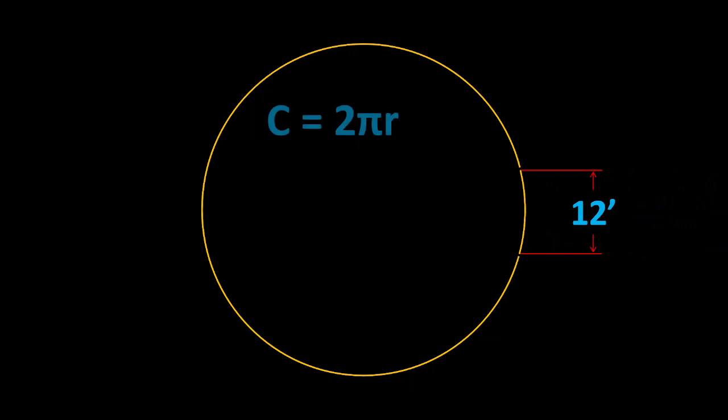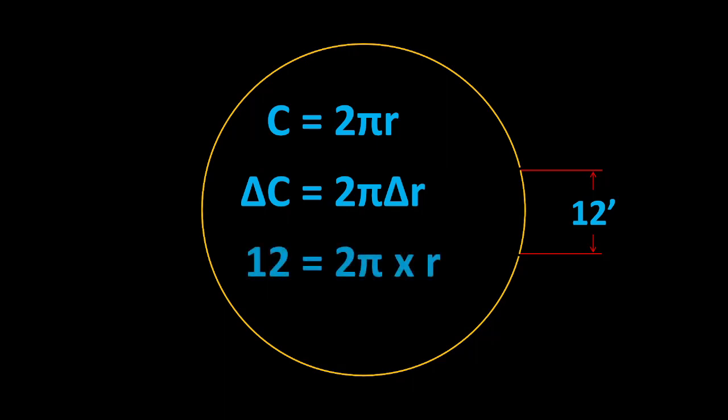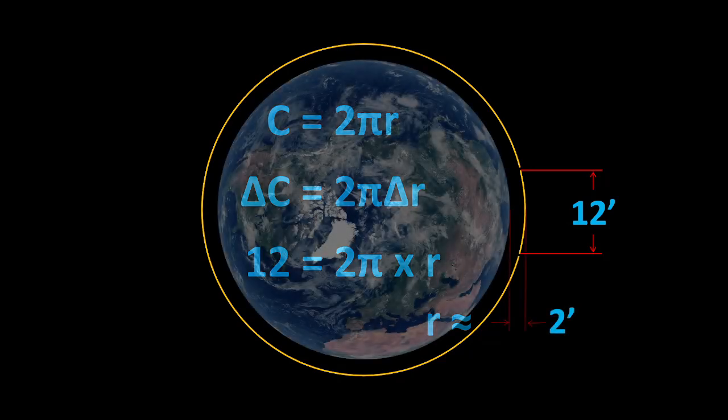If you take a moment to actually analyze this problem, it is a simple calculation. Circumference is equal to 2 pi times radius. Change in circumference is equal to 2 pi times the change in radius. Therefore, if the circumference changes by 12 feet, the radius changes by about 2 feet. Can a person crawl underneath 2 feet?